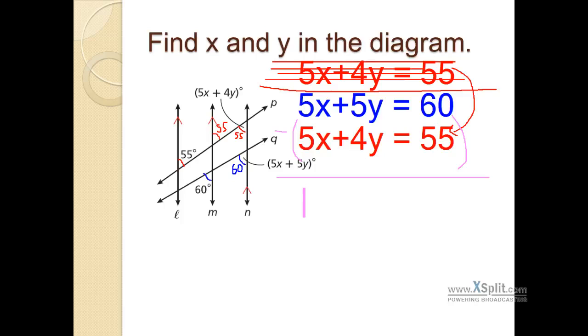So if I go ahead and subtract straight down, 5x minus 5x, that is 0x. 5y minus 4y is going to be a single y. And 60 minus 55 is going to be a 5. We cancel some things out. One doesn't need to be written. We just get y equals 5. We're halfway done with the problem. We're supposed to find x and y. We already found y. Excellent. We already have y equals 5.